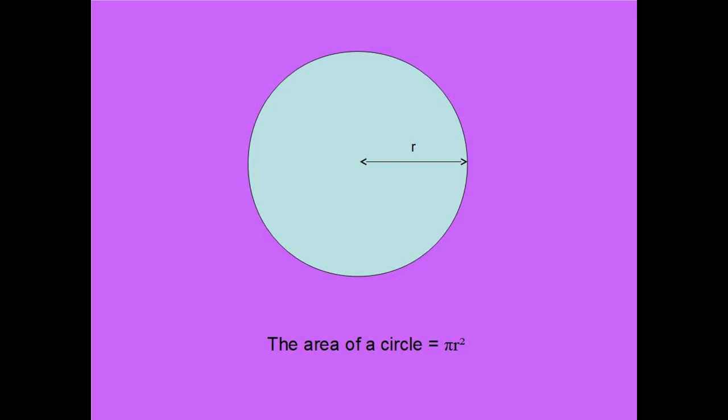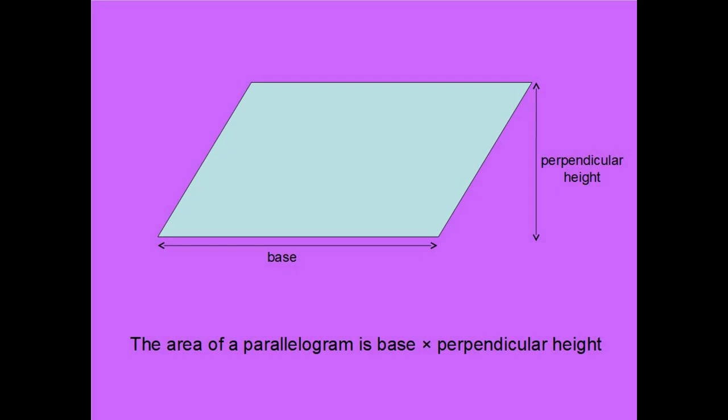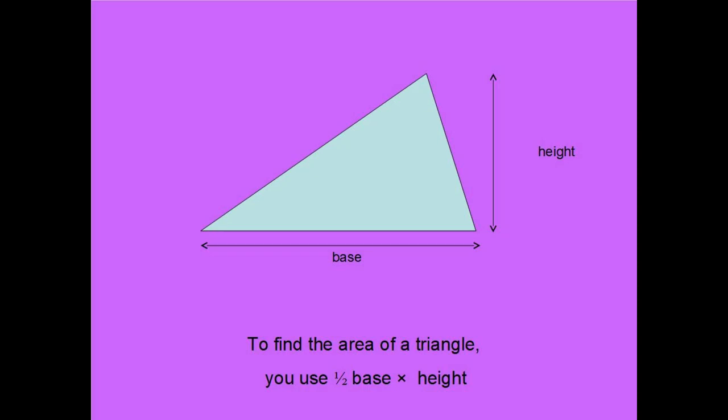The area of a circle equals pi r squared. The area of a rectangle is length times breadth. The area of a parallelogram is base times perpendicular height.